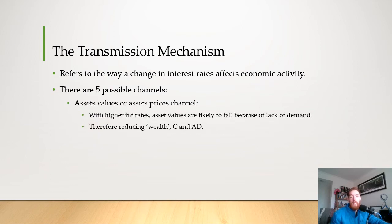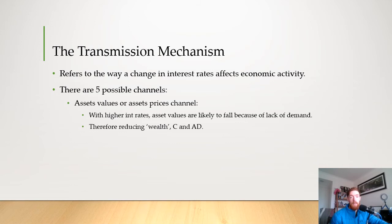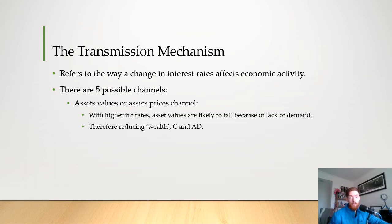There is also the asset values or asset prices channel. When interest rates are higher, asset values are likely to fall because of a lack of demand — people are less willing to buy houses because home loans cost more, so house prices should fall. This reduces wealth, which also reduces consumption spending and aggregate demand. On the other hand, when interest rates are low, as they currently are, it pushes asset prices up, which can lead to the rich becoming richer — their wealth goes up, increasing spending and aggregate demand overall.